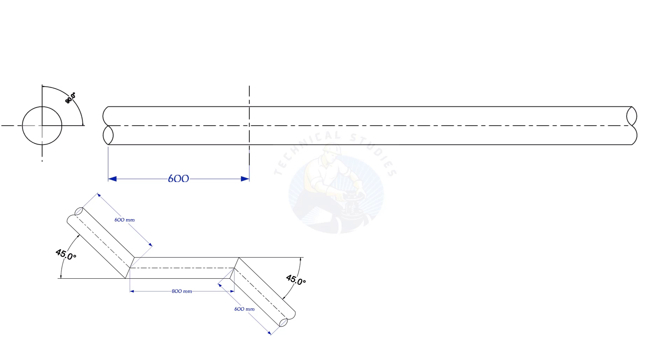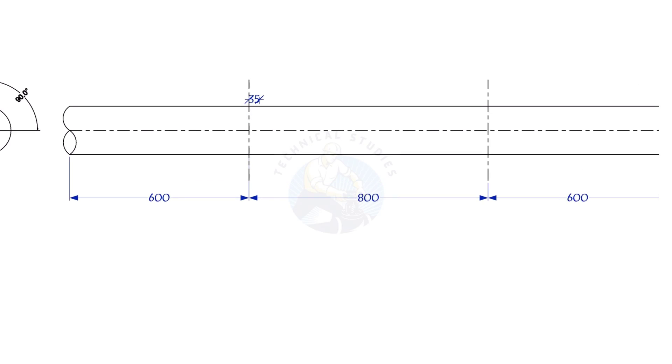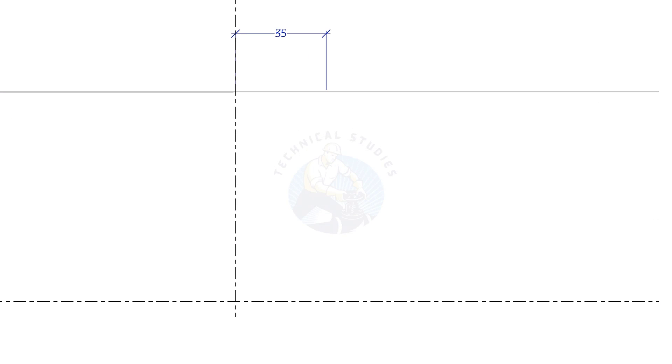Mark 600, 800, and 600 millimeters respectively as shown. Mark 35 millimeters to the right on the top side line and 35 millimeters to the left side on the bottom line.